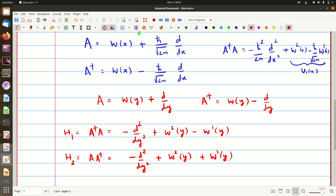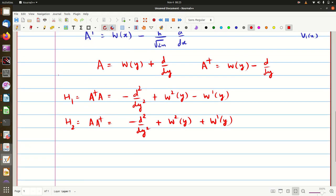Now, if you want to express H1 and H2 in terms of the harmonic oscillator Hamiltonian, the harmonic oscillator Hamiltonian is basically minus d squared upon dy squared plus y square. Right, this was the Hamiltonian. Now you can immediately see that w squared of y, we should choose as equal to y squared, that is w of y, the superpotential to be chosen for harmonic oscillator should be simply y.